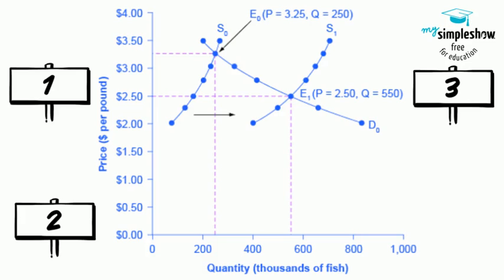Step 4: Compare the new equilibrium price and quantity to the original equilibrium. At the new equilibrium E1, the equilibrium price falls from $3.25 to $2.50, but the equilibrium quantity increases from 250,000 to 550,000 salmon.